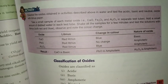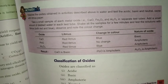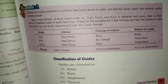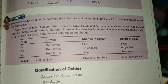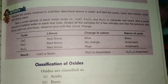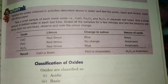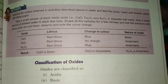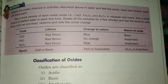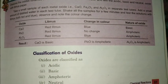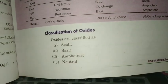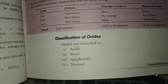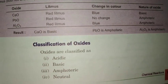Results: calcium oxide turns red litmus to blue — it is basic. Lead oxide shows no change — it is amphoteric. Aluminum oxide turns red litmus to blue, but this is an exception — aluminum oxide is amphoteric in nature. Amphoteric means it reacts with both bases and acids. So CaO is basic, PbO is amphoteric, and Al2O3 is also amphoteric. Oxides are classified as acidic, basic, amphoteric, and neutral.